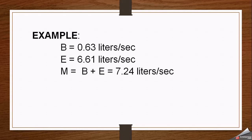For example, if blowdown losses are 0.63 liters per second and evaporation losses are 6.61 liters per second, then the makeup water quantity can be calculated by adding these two losses together. This is a simple relationship used to calculate the quantity of makeup water required.